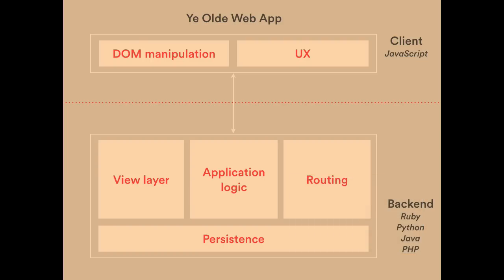Before we dive into the details, let's take a brief look back at how we've been building web apps for the past few decades. For most of the web, there was maybe a little bit of JavaScript running in the client to do some basic DOM manipulation — some date pickers, little things — but the bulk of the application ran on the server in something other than JavaScript, like Ruby, Python, or Perl. The server handled the view layer, application logic, models, routes, and persistence.